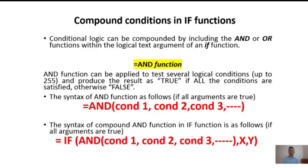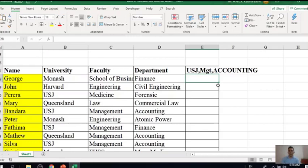So what is the role of the AND function? The AND function can be applied to test several logical conditions — you can test up to 255 logical conditions. If all the logical conditions are satisfied, this function will give you the result as TRUE; otherwise you will get the result as FALSE. This is similar to boolean operations. The AND function tests many conditions, and if all arguments are true, it returns TRUE; otherwise the result will be FALSE. We'll now try this in Excel.